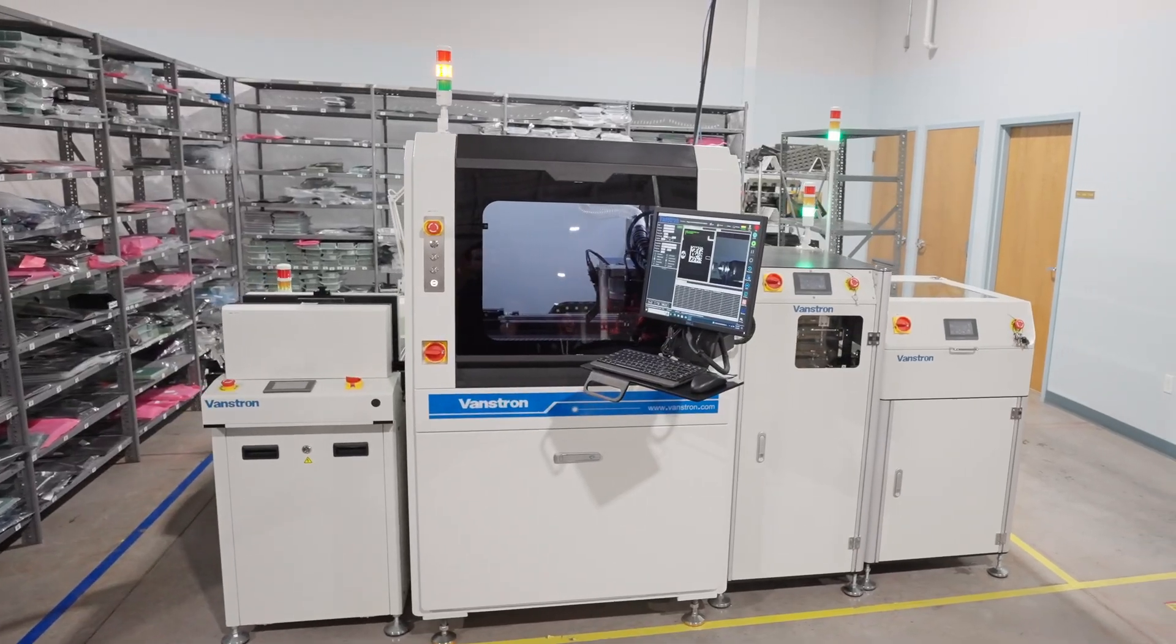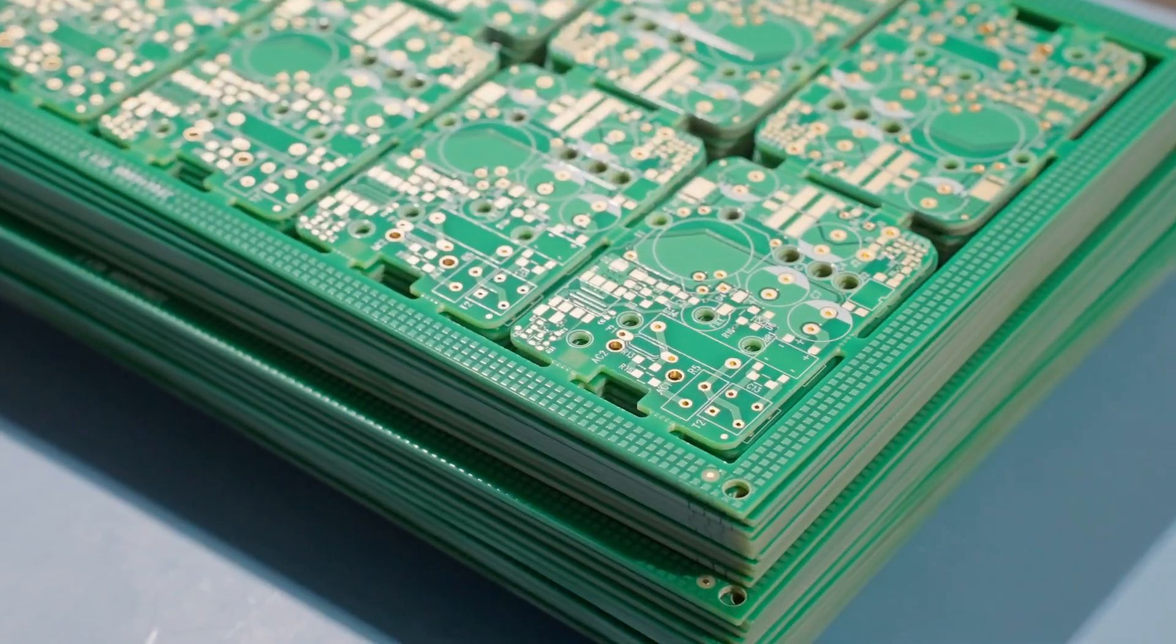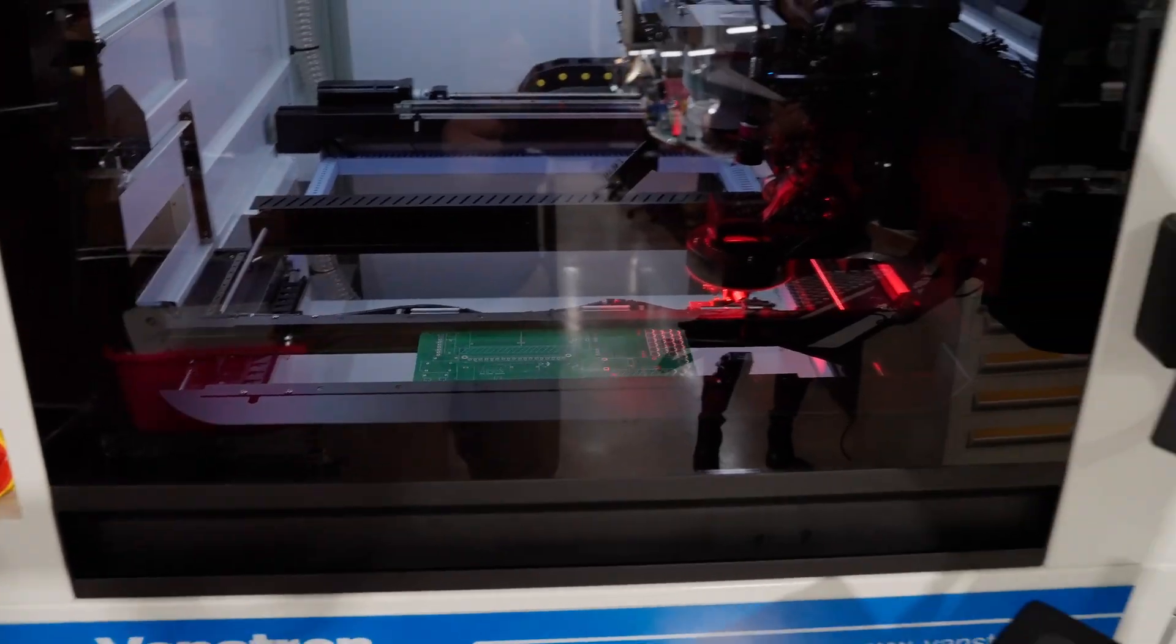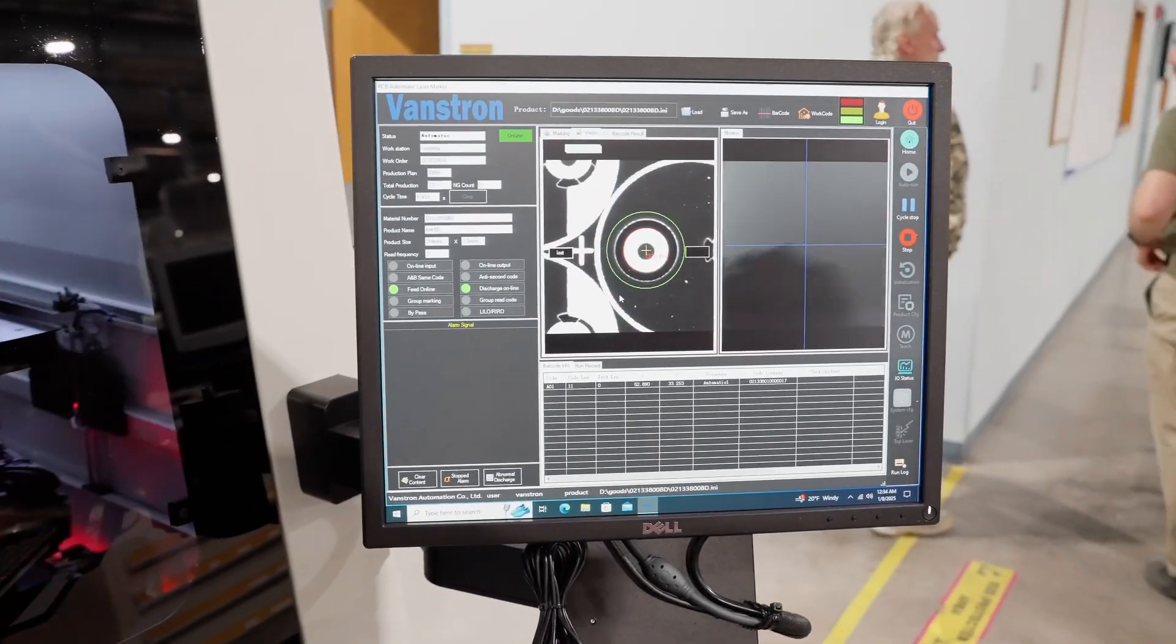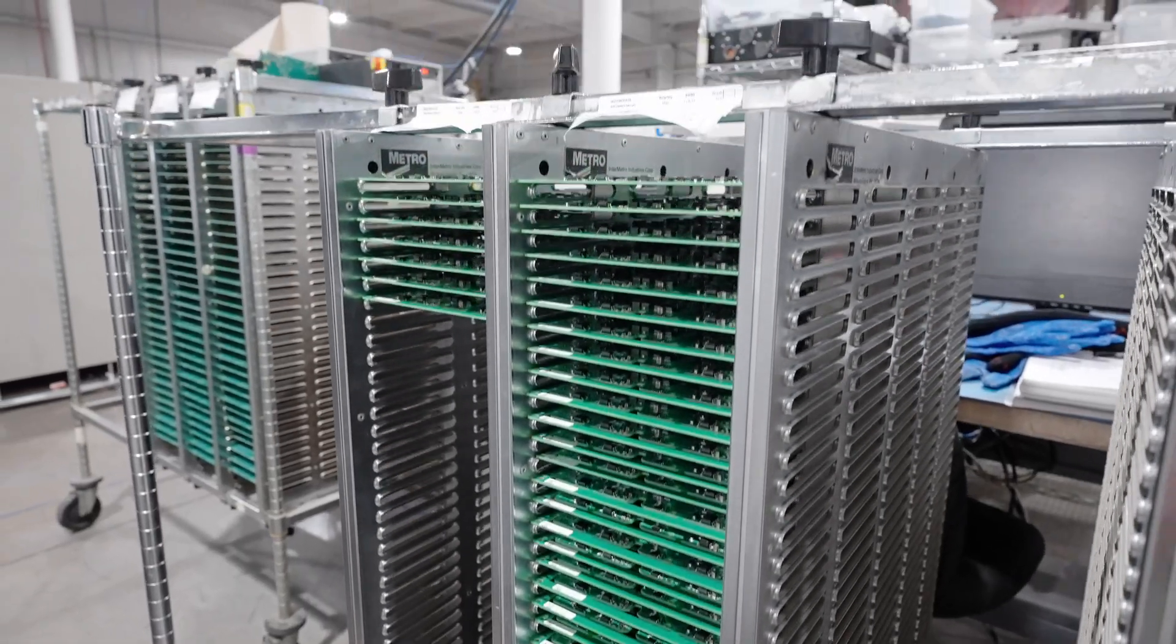Today, Z-Axis uses laser marking instead. Rather than applying a single sticker to a 12-up array, we apply a permanent and unique barcode to every board. Laser marking is fast and automated, and it provides traceability not only during PCB assembly, but throughout the entire product lifecycle.